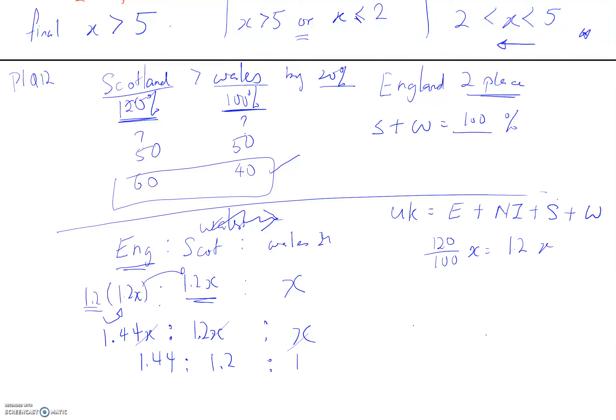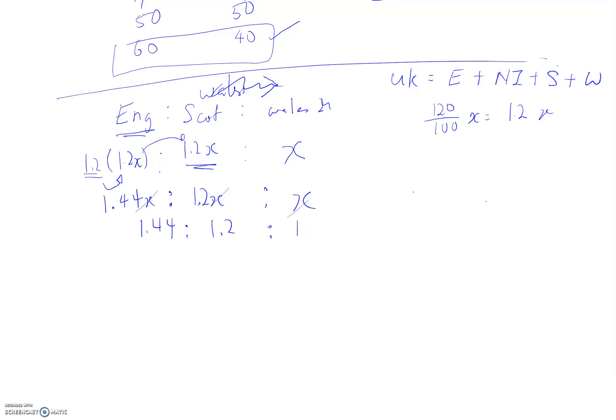So if I take away all the x, because I don't know what's the x anyway, this is 1, this is 1.2, this is 1.44. Do you know how to reduce to the lowest term? Which two did they want? They want Wales and England. So I highlight - they want Wales and England.